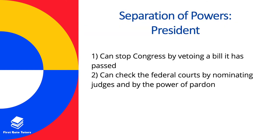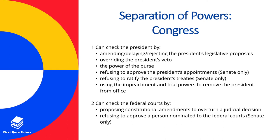Looking at the separation of powers, the president can stop Congress by vetoing a bill it has passed, and can check the federal courts by nominating judges and by the power of pardon. Congress can monitor the president by amending, delaying, or rejecting the president's legislative proposals, and can override the president's vetoes. Congress can use the power of the purse, refuse to approve the president's appointments (Senate only), refuse to ratify the president's treaties (Senate only), and can use impeachment and trial powers to remove the president from office.